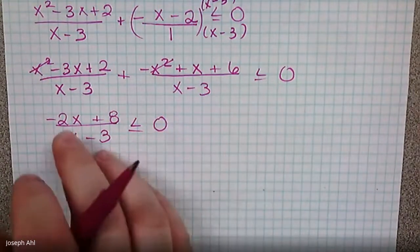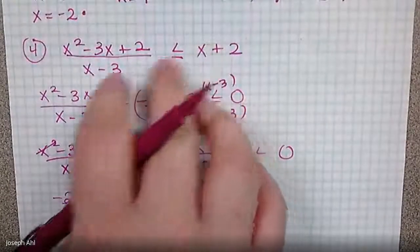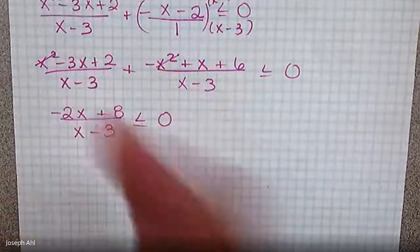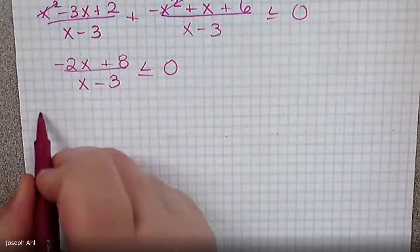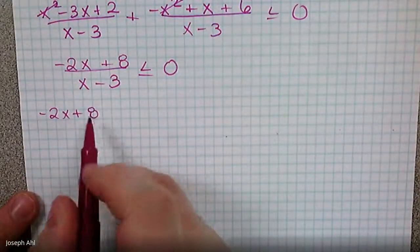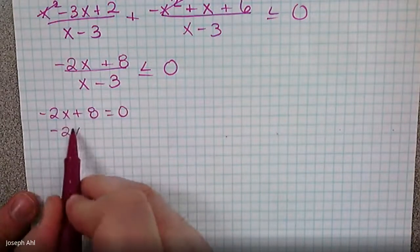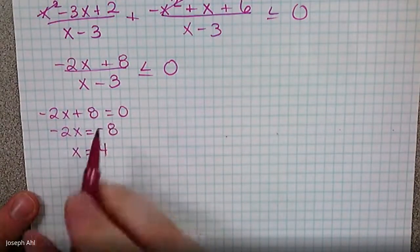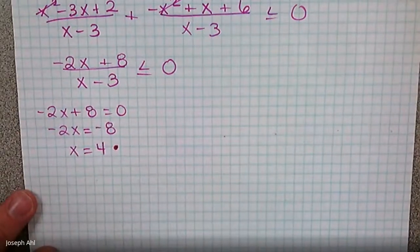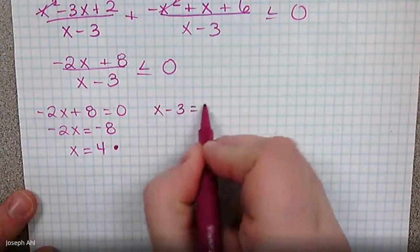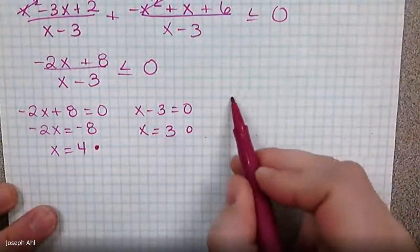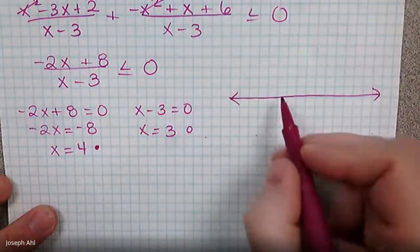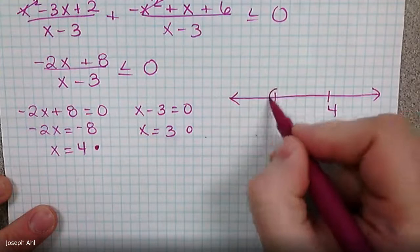This looks much simpler than what we started with — notice the x squared went away, leaving something linear on top and bottom. Setting the numerator to zero: negative two x plus eight equals zero gives x equals positive four, which will be a closed circle. The vertical asymptote from the denominator equals zero at x equals three, which is an open circle. On the number line, we partition around three and four — open at three, closed at four.